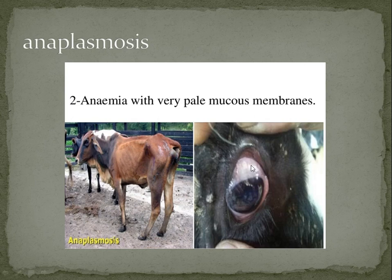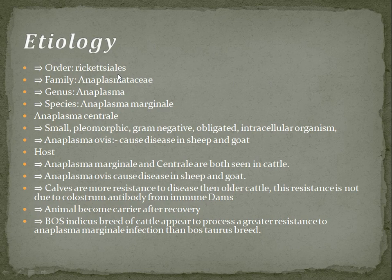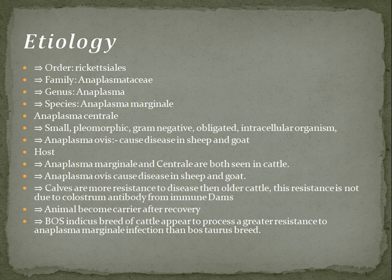To start with the etiology of anaplasmosis, let us begin with the taxonomy. It is classified under order Rickettsiales, family Anaplasmataceae, genus Anaplasma, and species Anaplasma marginale and Anaplasma centrale. Both species are infective. It occurs due to small pleomorphic gram-negative obligate intracellular organisms.